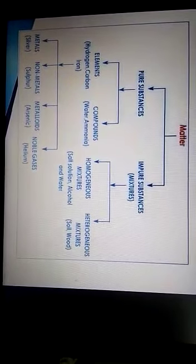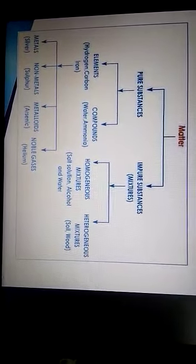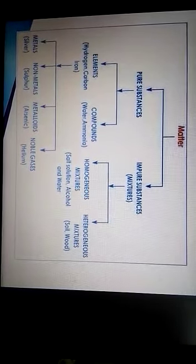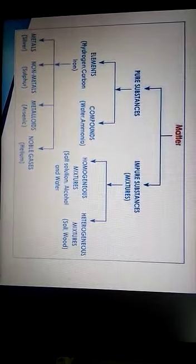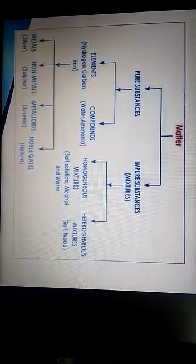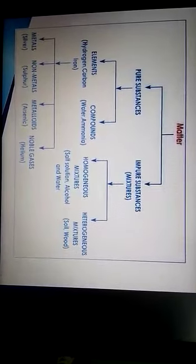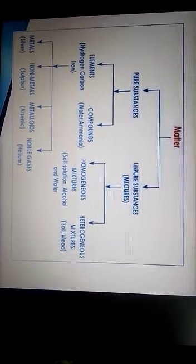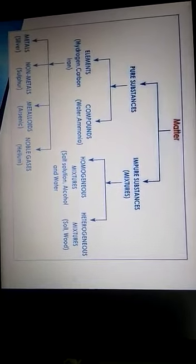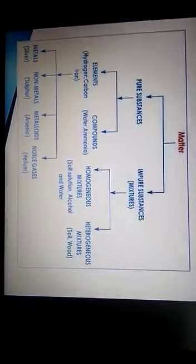Zero group inert gases include helium, lithium, beryllium, krypton, xenon, radon. Impure substance mixtures include homogeneous mixtures and heterogeneous mixtures. Homogeneous mixtures contain the same type of mixture, and heterogeneous mixtures contain different types of mixtures.